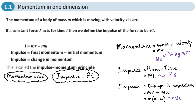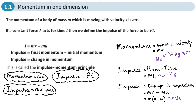Putting these two formulae together, we can say force times time equals change in momentum. So we have: impulse equals mv minus mu, and then combining: force times time equals change in momentum, because they both equal impulse.